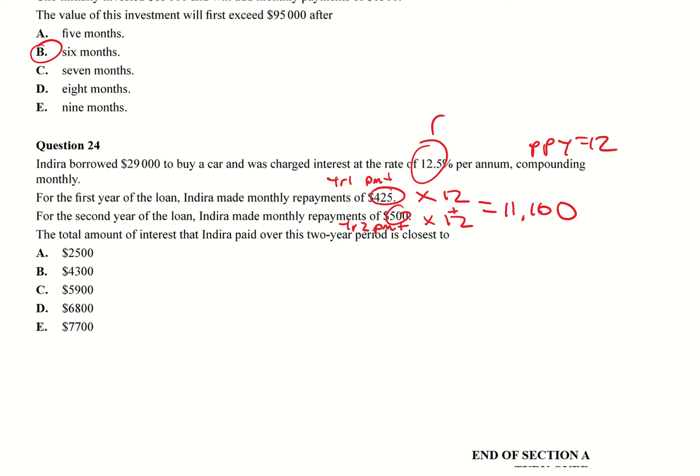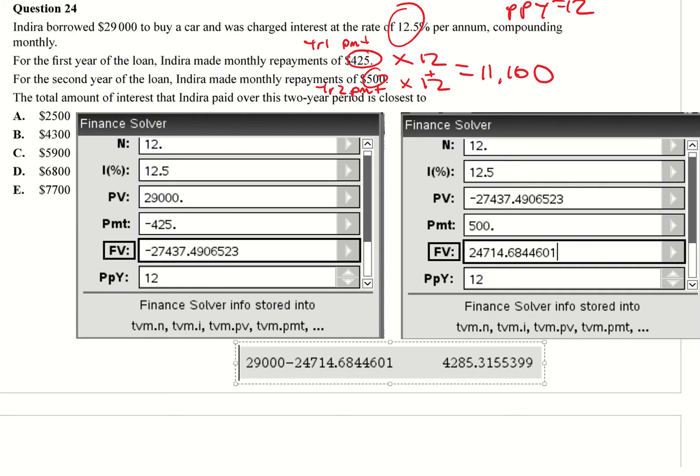We'll clip that. We'll come back to that in a moment. We're going to need to use finance solver. So what I've done here, this here is year one and this is year two. What you're looking for in year one: I've got my n is 12, 12.5%, my present value is $29,000. Put that in, my payment, remember negative because you're paying it into the bank, it's coming out of your bank account, and I get a final value of $27,000.